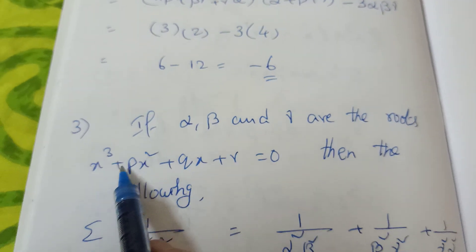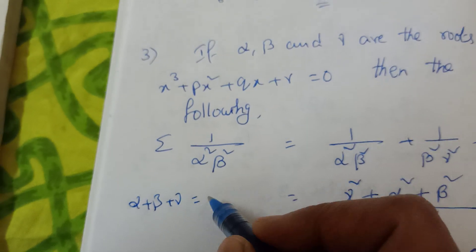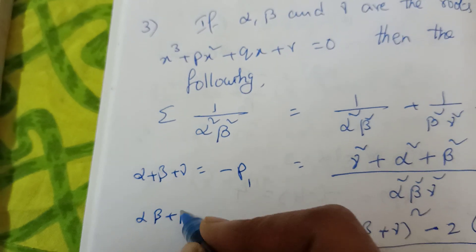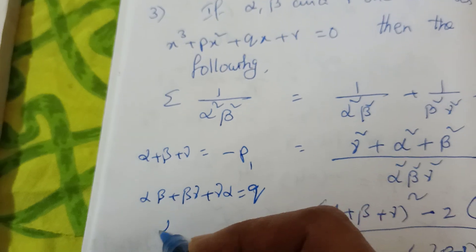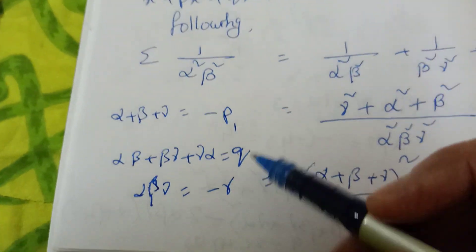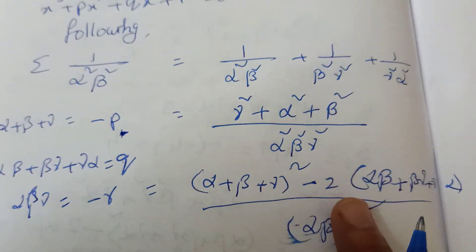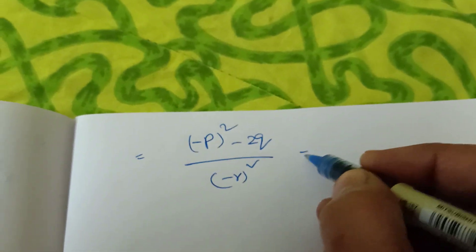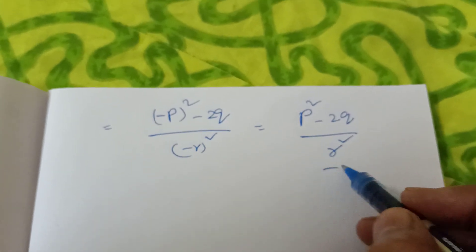Now what is the equation — in this equation, Alpha plus Beta plus Gamma is minus p1 by p0, which is minus p. Alpha·Beta plus Beta·Gamma plus Gamma·Alpha is p2 by p0, which is q. Alpha·Beta·Gamma is minus p3 by p0, which is minus r. Now apply the formula: numerator is (α+β+γ)² minus 2(αβ+βγ+γα) equals (minus p)² minus 2q equals p² minus 2q, divided by (minus r)² equals r². So the answer is (p² minus 2q) divided by r².